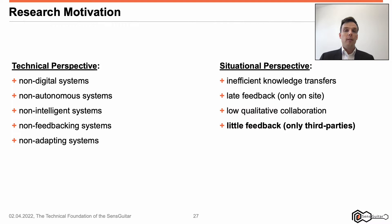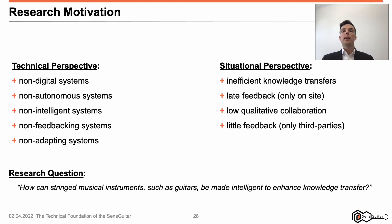Fourth, little feedback. To my knowledge, the only way of acquiring feedback refers to virtual sessions having a camera or telephone. I am going to show that this form of feedback is limited. Thus, the research question was: how can stringed musical instruments, such as guitars, be made intelligent to enhance knowledge transfer? Although shown with the example of guitars, the following accounts for any stringed instrument.